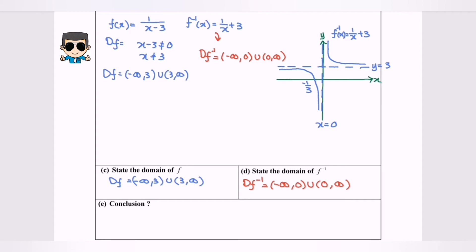By referring to the graph on the right hand side, we notice that the range for f inverse is equals to negative infinity as a minimum value until 3, union from 3 until positive infinity, where 3 is not included.